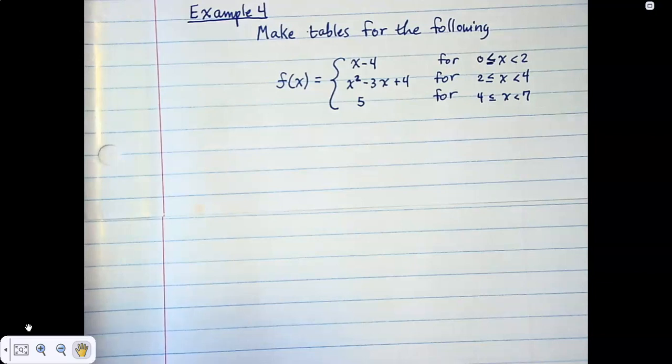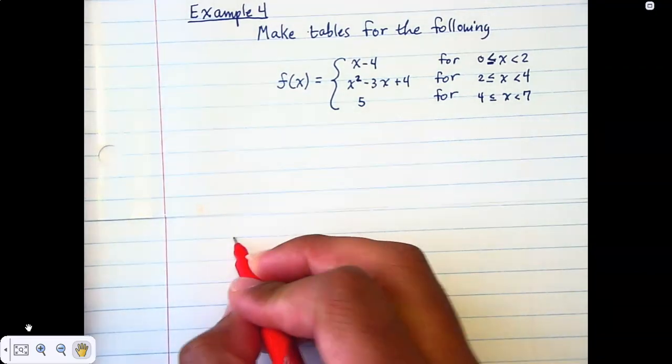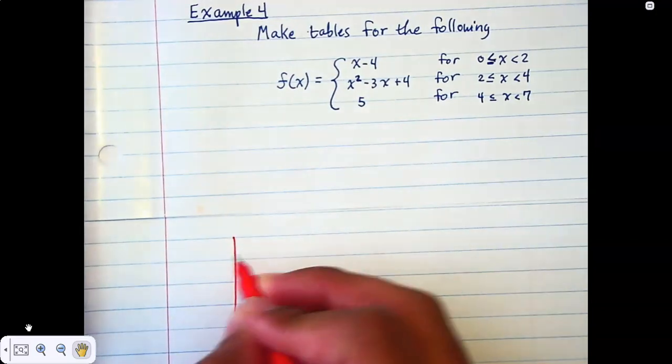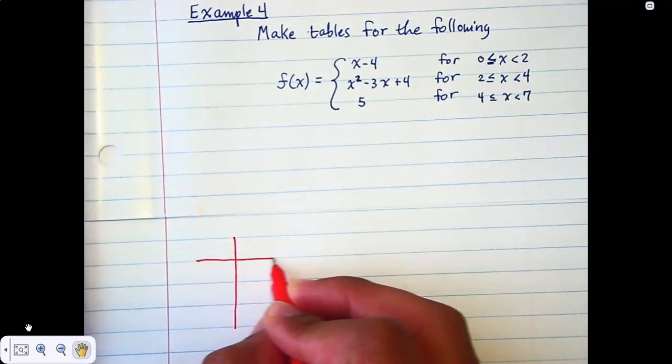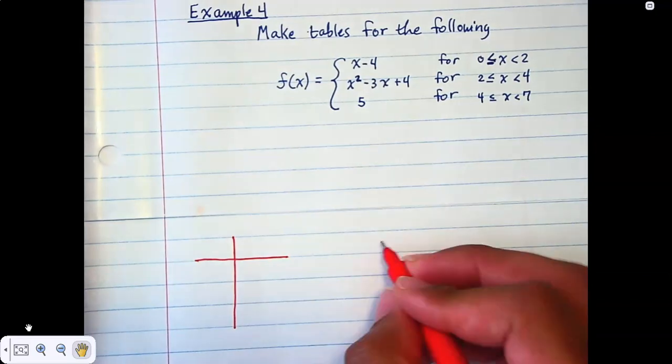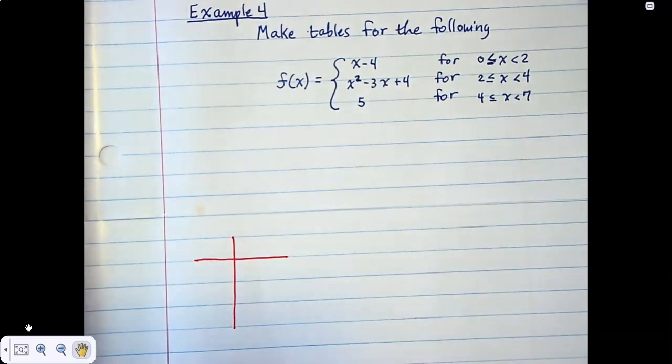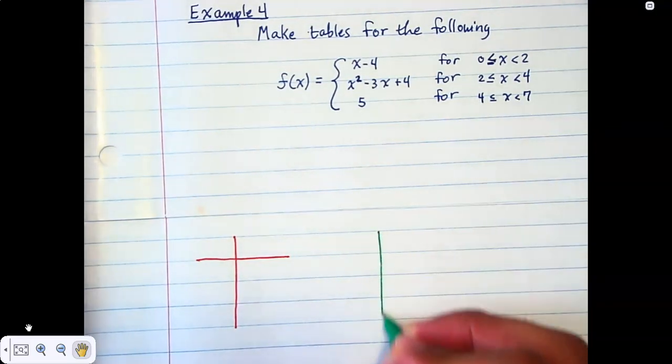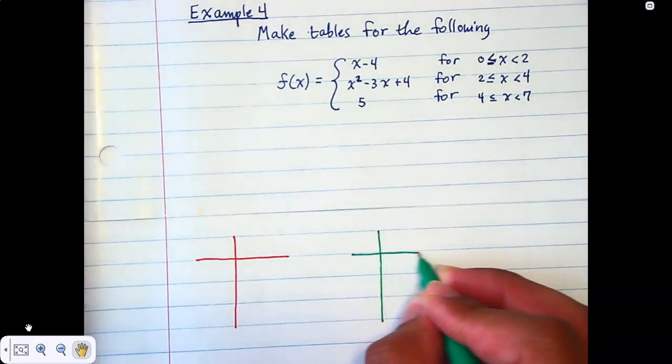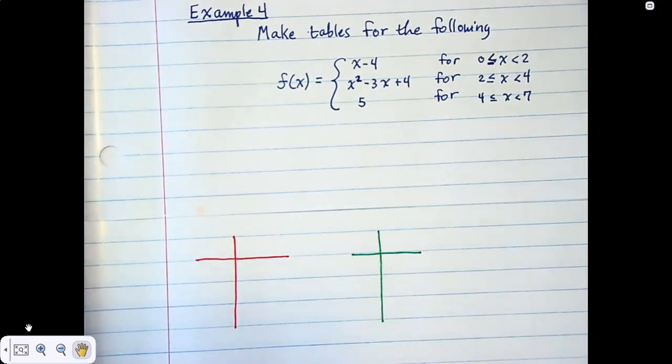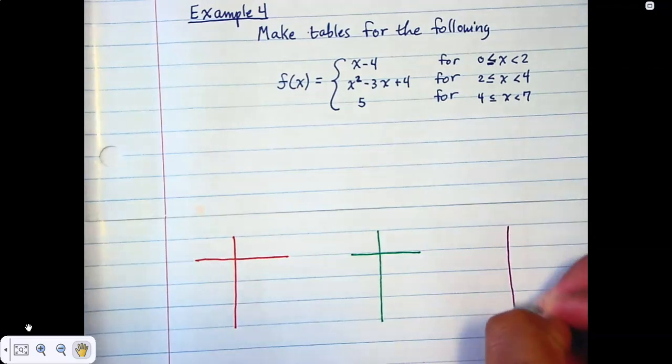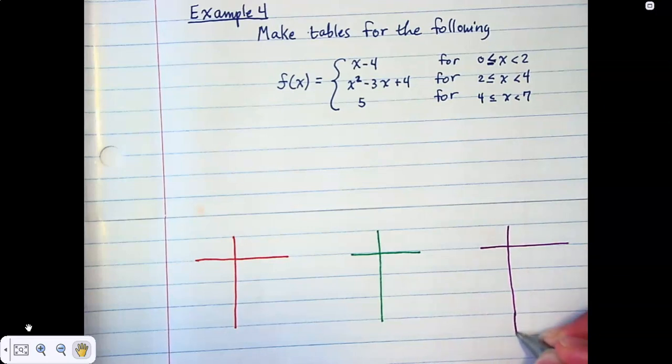So let's go ahead and write this down. We have three different equations. It's going to be kind of shorter, but the tables are going to be shorter because the amount of numbers are smaller. And let's do purple for the last one. I'm going to have to extend that a little bit longer because there's more there.